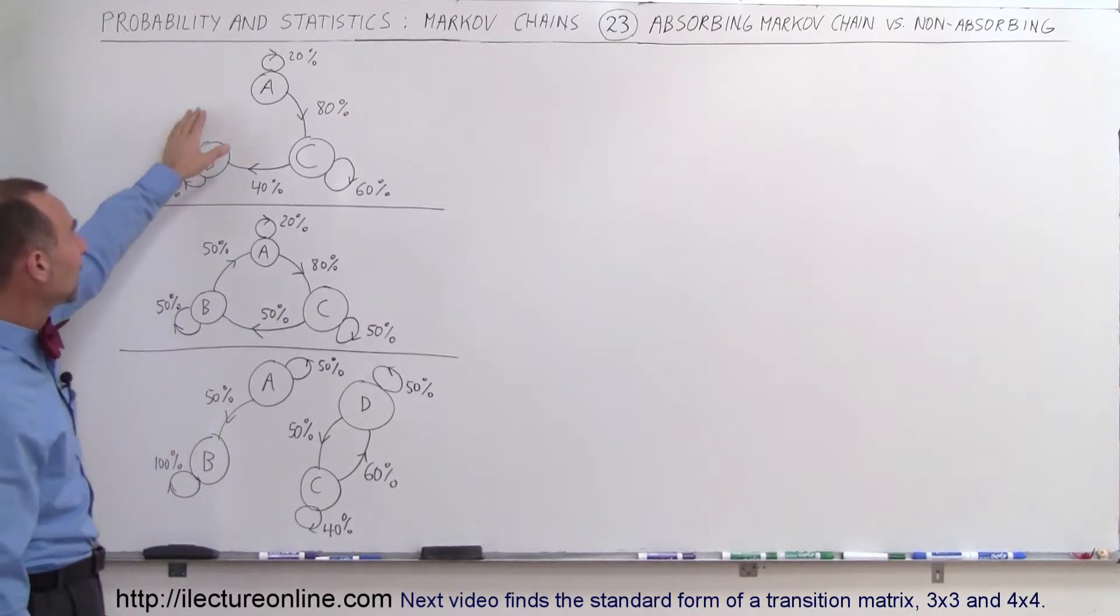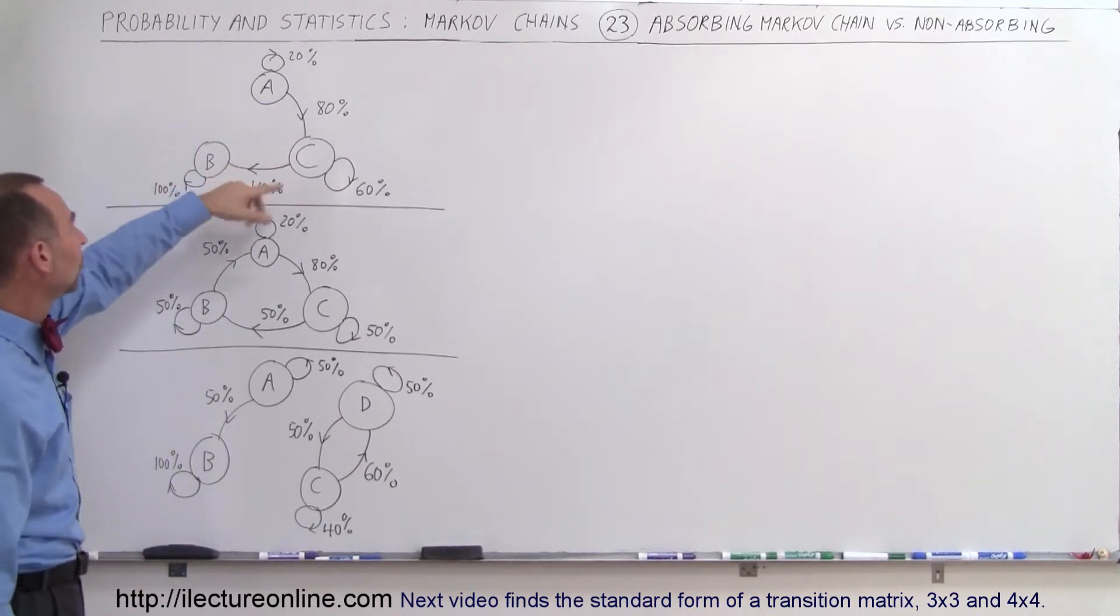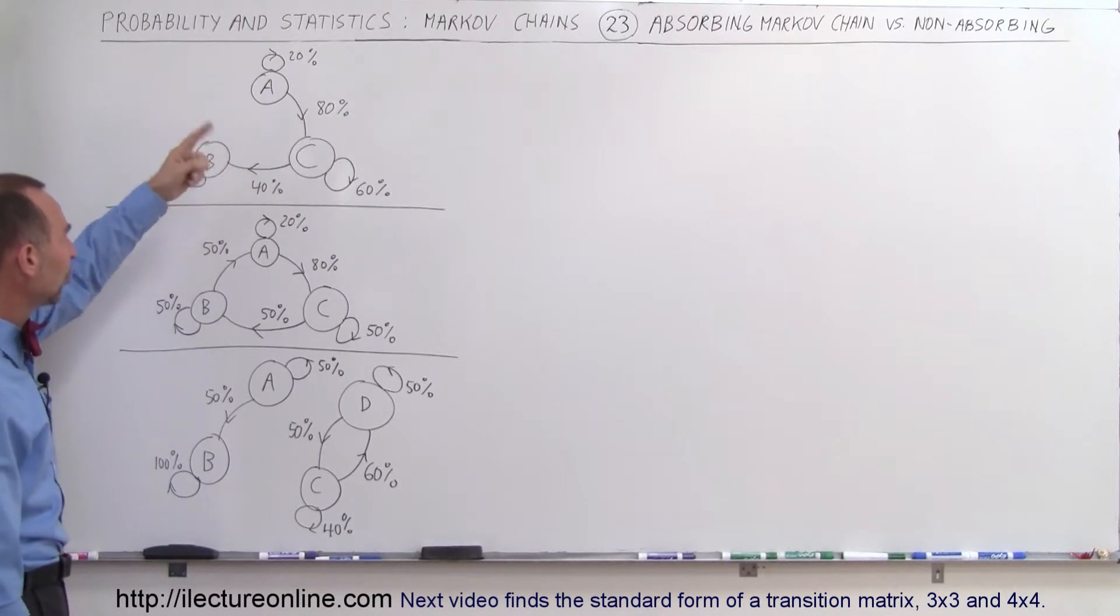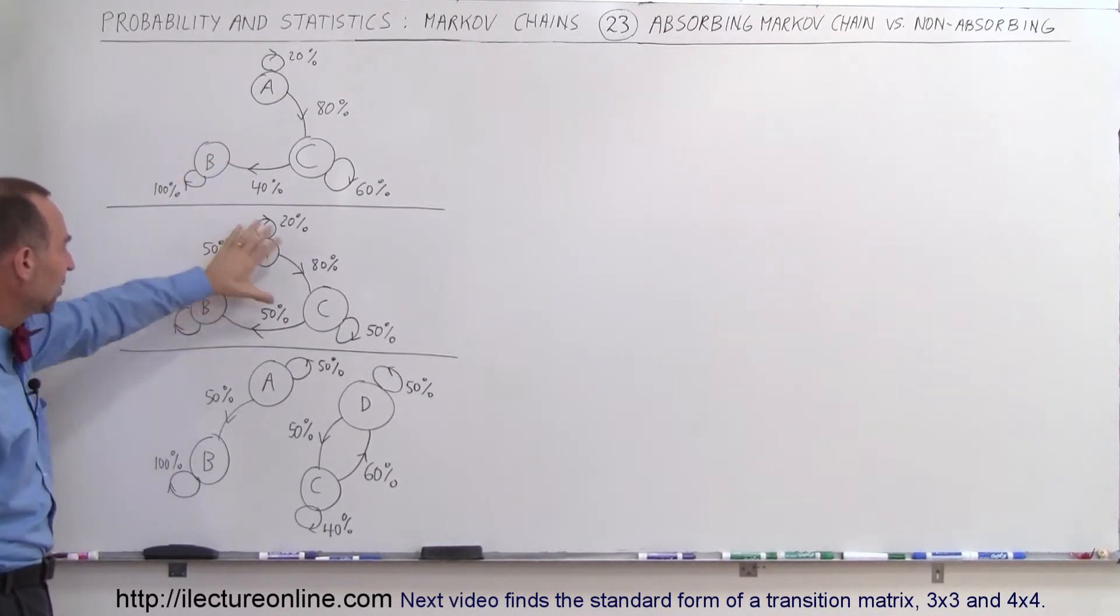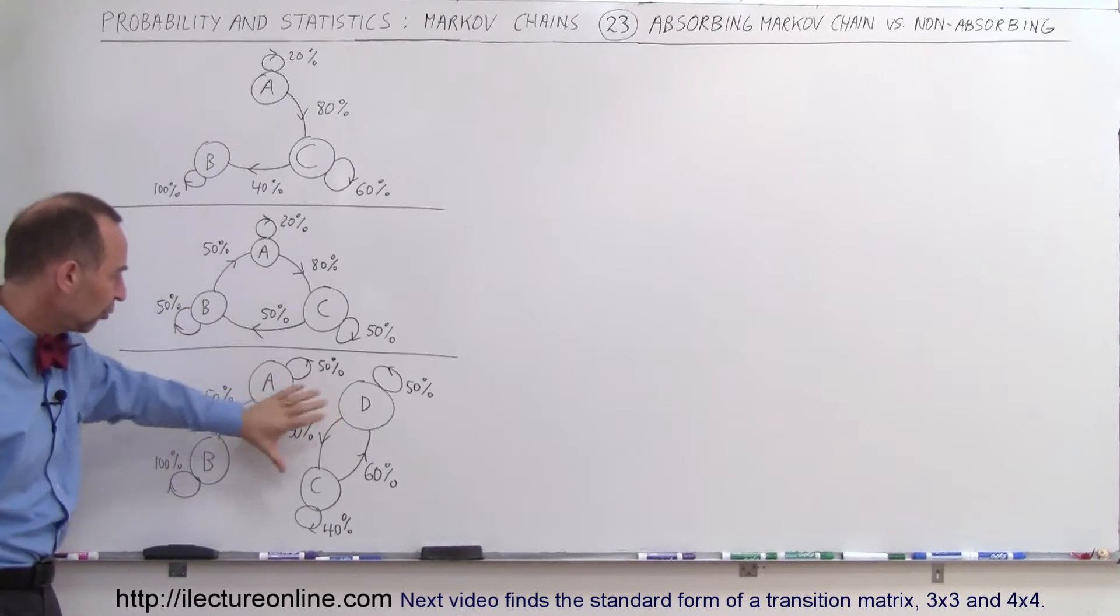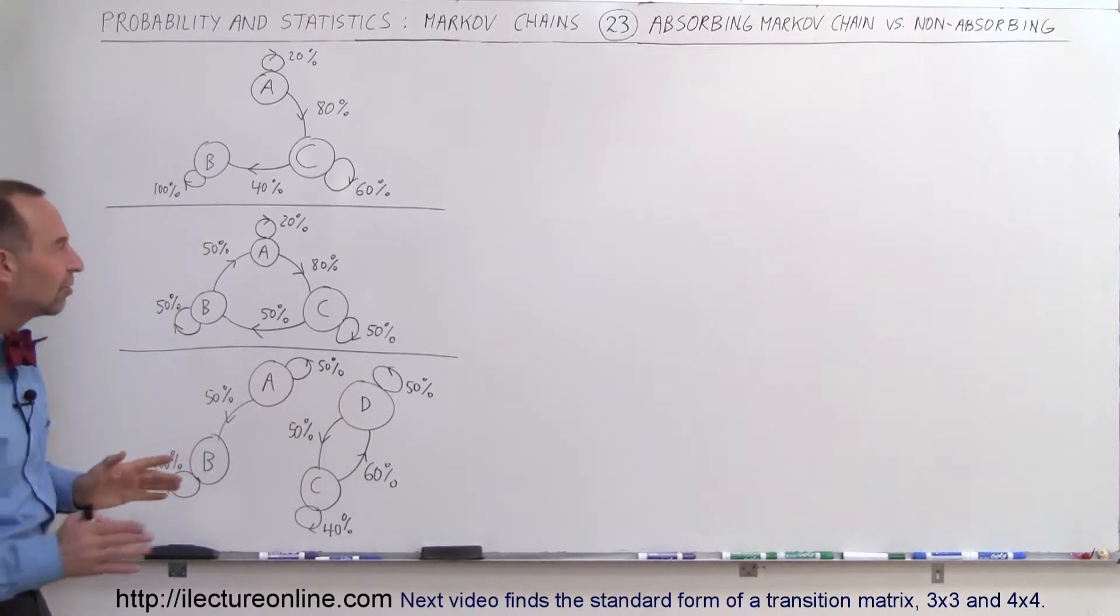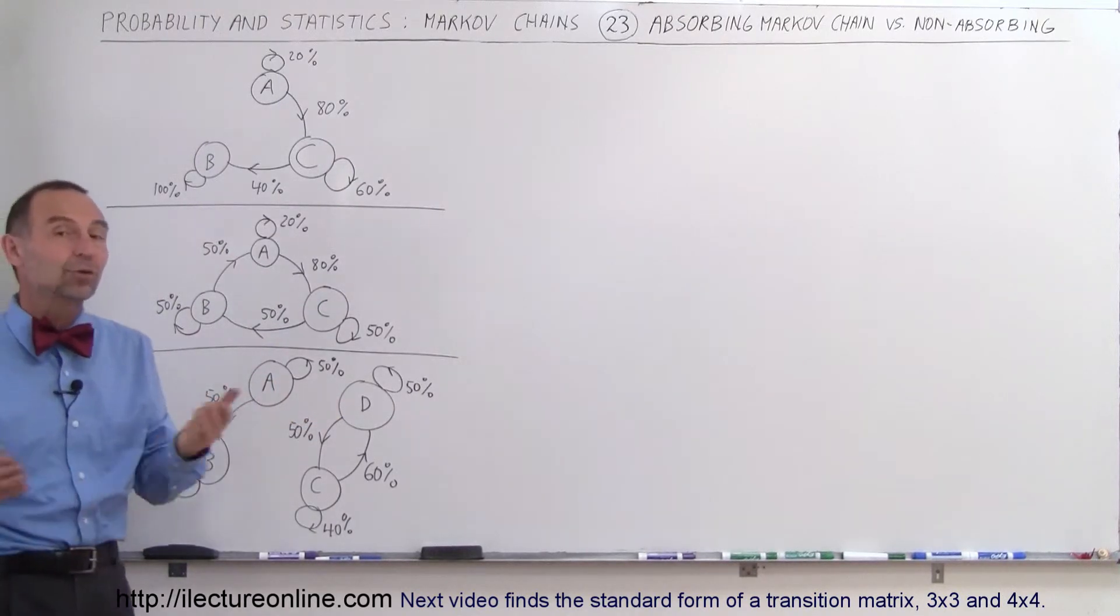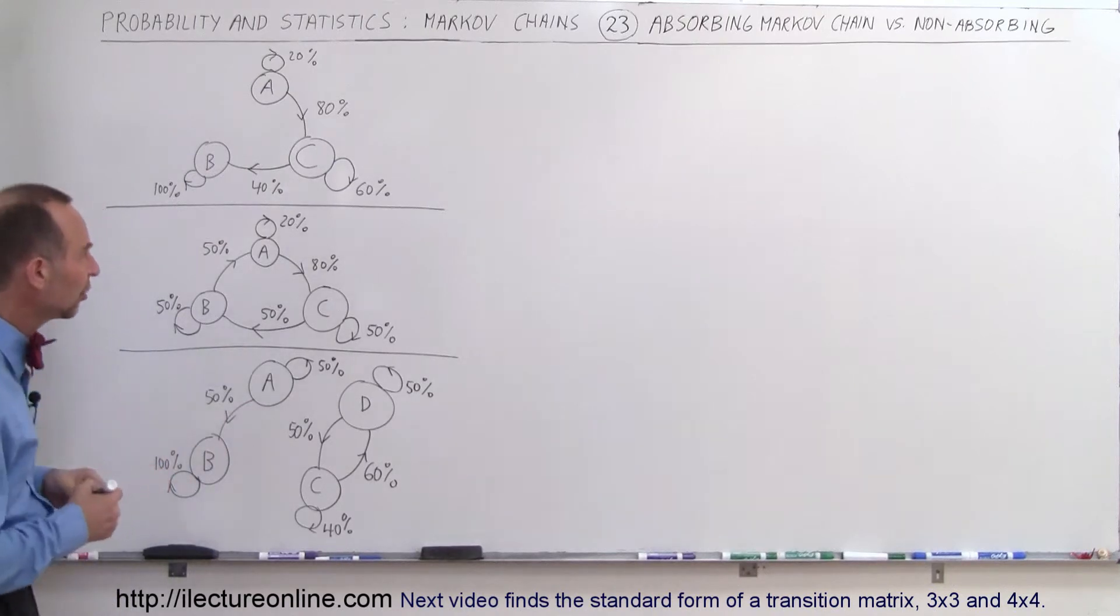So here we have a situation where we have three different stores and populations going back and forth between the stores. We have three different stores here again, and now we have four stores here. So in each of those situations, can we determine whether or not we have an absorbing or non-absorbing Markov chain? Let's go ahead and build up the transition matrix for each of them and take a look.